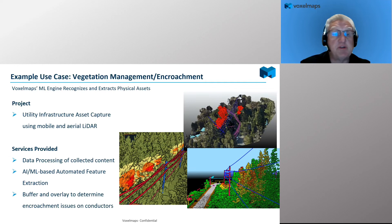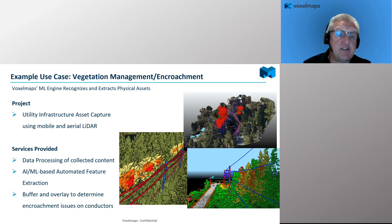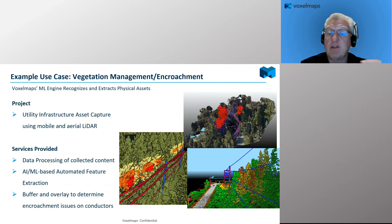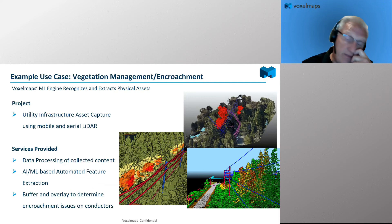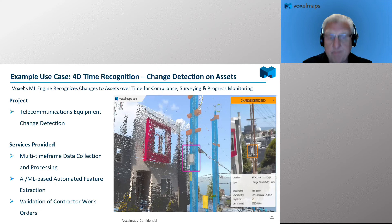Vegetation management and encroachment is another use case. Asset capture using both mobile and aerial LiDAR — merging the two together — then automated feature extraction of poles, conductor wires, and vegetation. From that, we do a buffer and overlay around each conductor line at various distances to see where encroachment issues exist on those conductors, then identify the location and amount of vegetation for workload or remedial action.